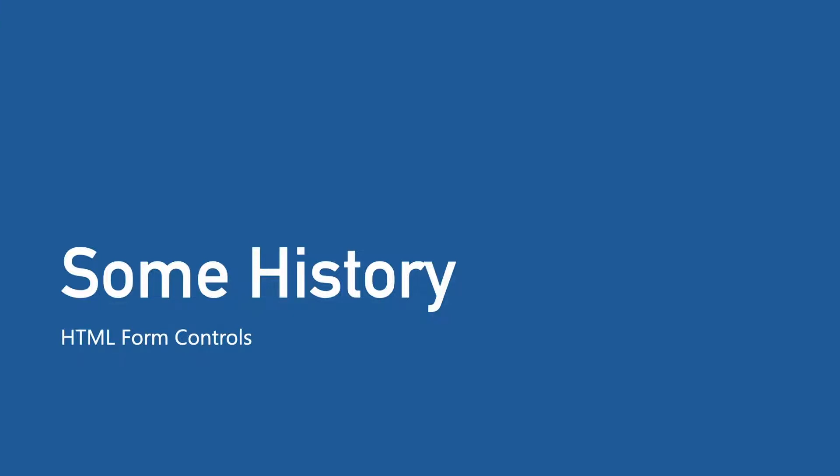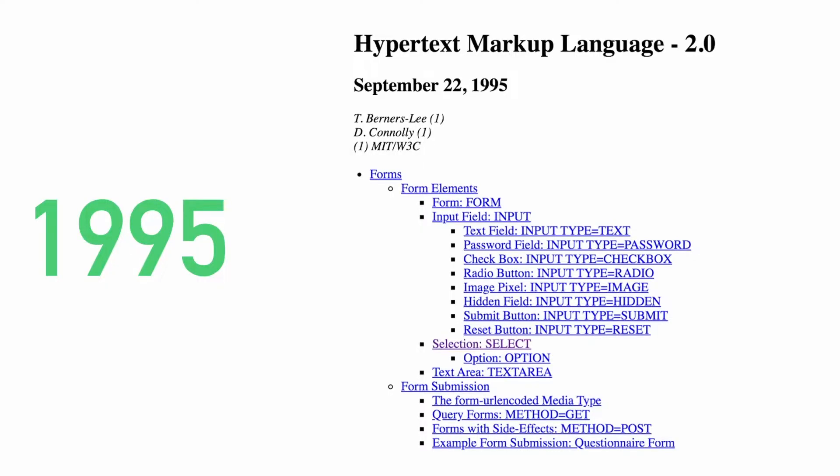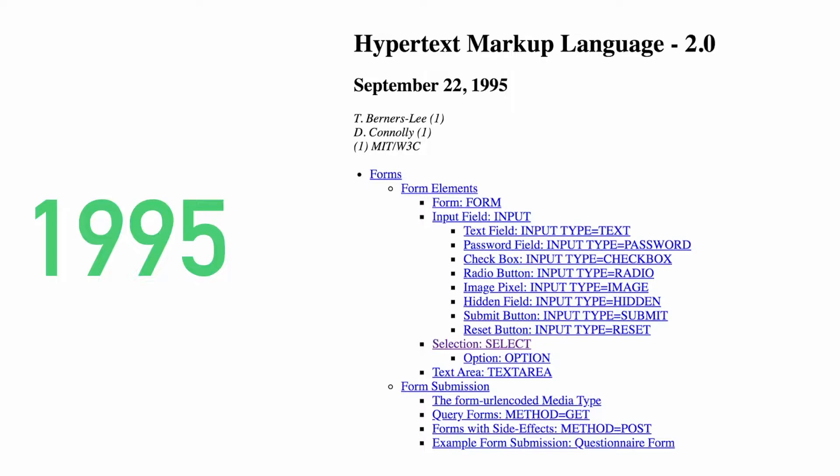I need to go back to 1995 and talk about some history. In 1995, HTML 2.0 became the first official specification ratified by the W3C, and with that spec came our first set of standardized form controls. But the specification didn't standardize form parts and how forms were constructed — it standardized the method to enter data into an HTML document and for that data to be used to perform an action such as logging into a website. So it standardized what forms were supposed to do, but not how they're built.